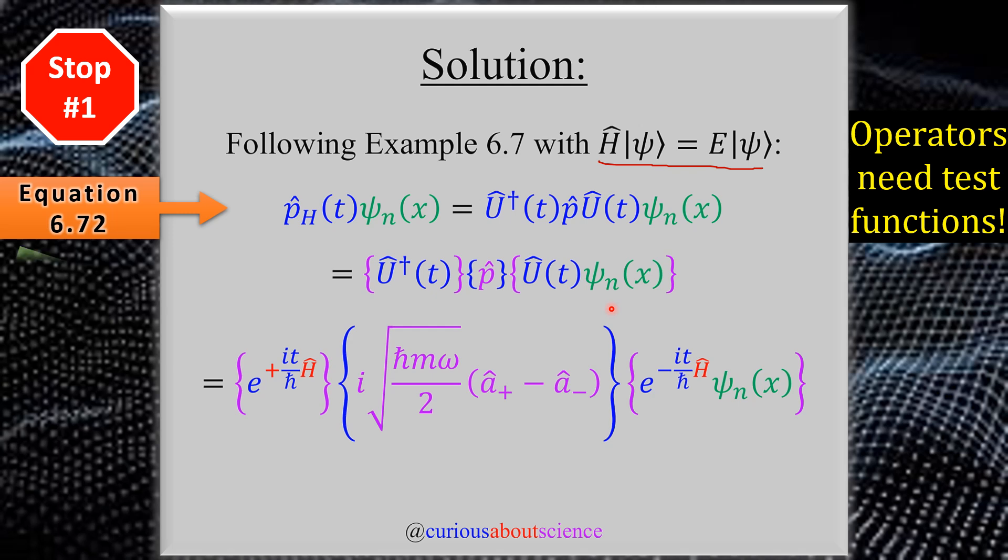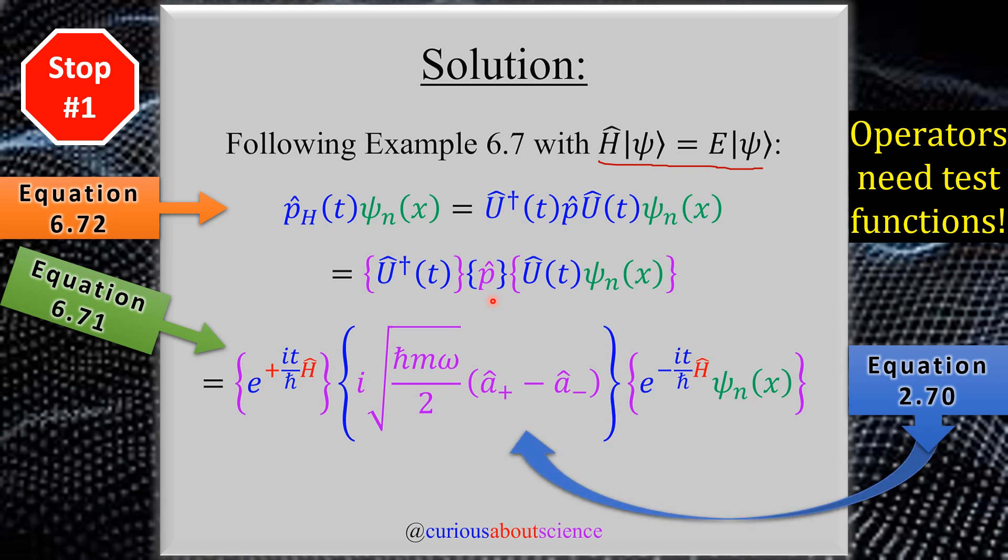Because these are operators, we need to act on a test function, which we see in green. That's why I broke it up specifically to where we have a structure where we can substitute in the definitions, realizing that Û†(t) and everything to the left needs to act on a test function. Since we're dealing with the harmonic oscillator in this example, everything surrounding that needs to be with respect to the harmonic oscillator solutions as a test function. Let's see what these definitions are.